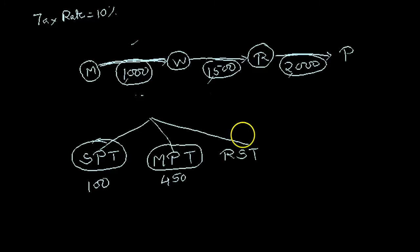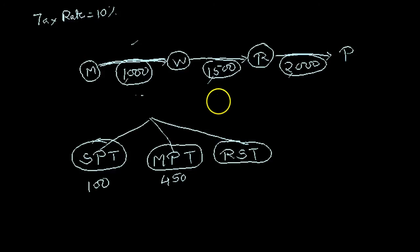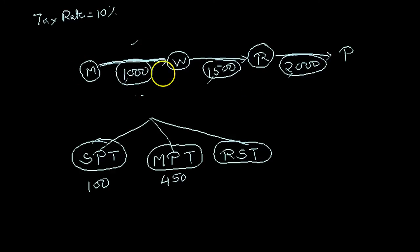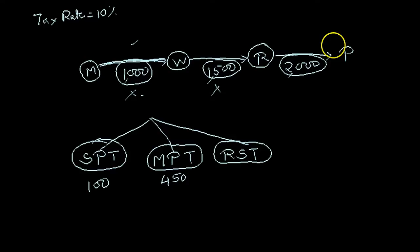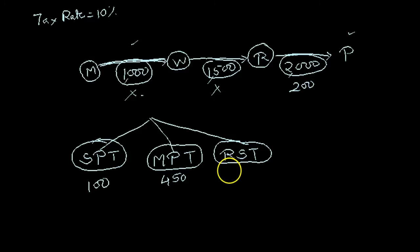In Retail Sales Tax, the sales tax will be levied at the end — that is, at the ultimate sale to the general public. Manufacturer to wholesaler, there will be no tax. Wholesaler to retailer, no tax. But when the retailer sells to the general public, there will be a tax of 10%, that is Rs. 200. So under Retail Sales Tax, the tax collected by the government will be Rs. 200.